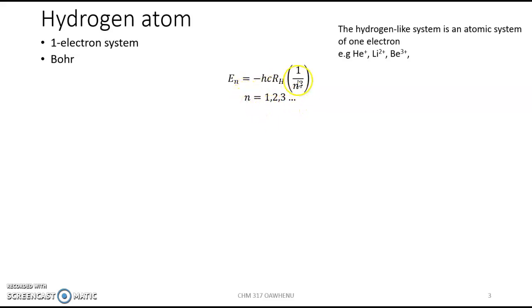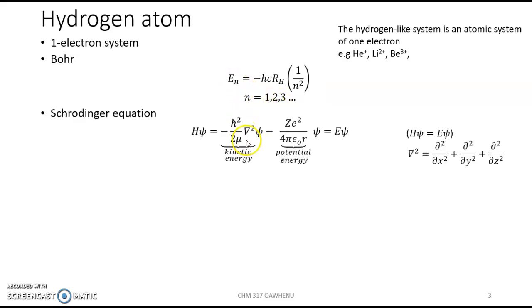However, as of that time, there was no justification for n taking these values, which means that the energy levels were quantized. Schrödinger was able to solve that equation.